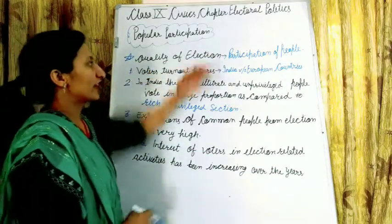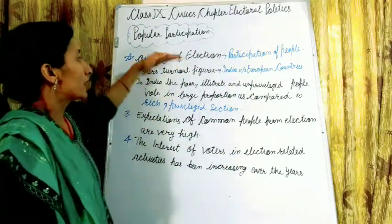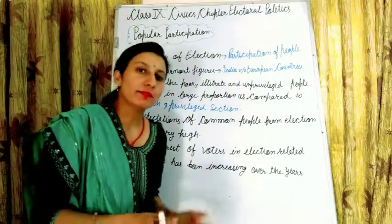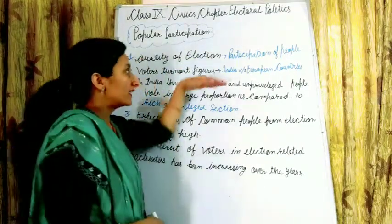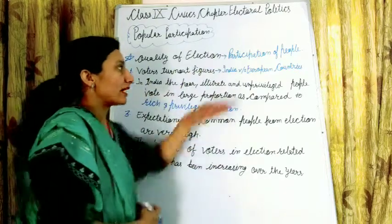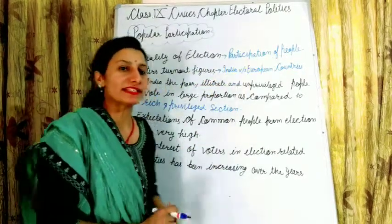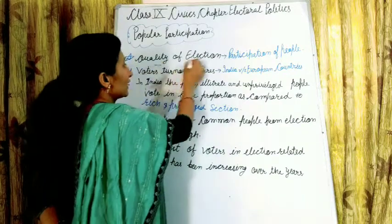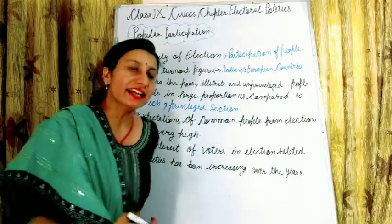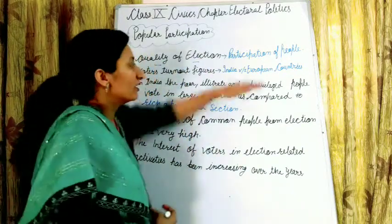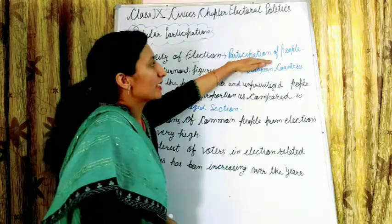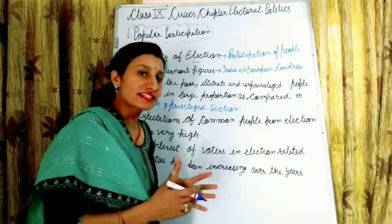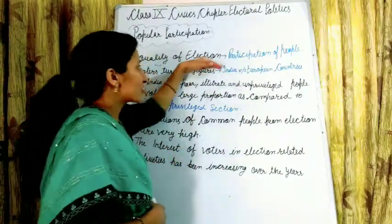The first topic is Quality of Elections. The quality of our elections depends on popular participation — through participation we can examine whether the quality is better or not. The more interest people have in elections, the more we can assess their quality.